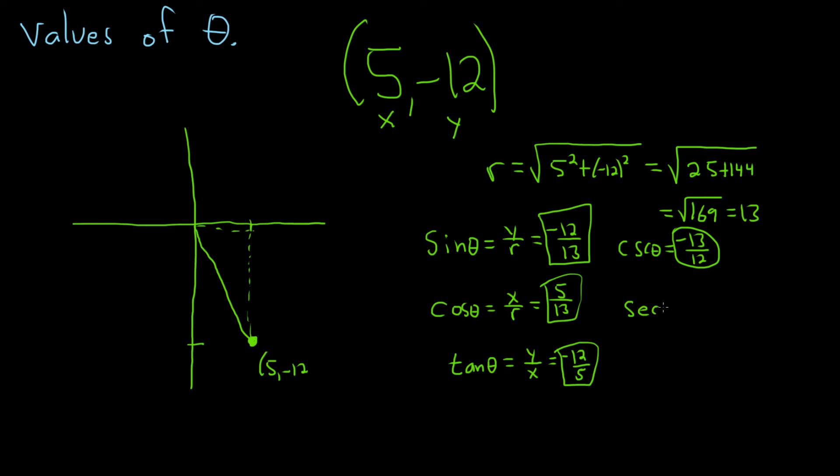And the secant of theta, that's the reciprocal of cosine. That will just be 13 over 5. Again, you just flip it.